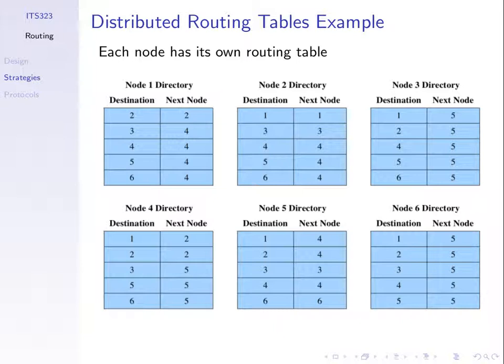A node in the network, like a wireless router or a campus router, may be running a routing protocol that is continuously trying to learn about the network topology, learn about the link costs, and continually calculating and updating the routing tables. The process of updating the routing tables is part of the routing protocol.